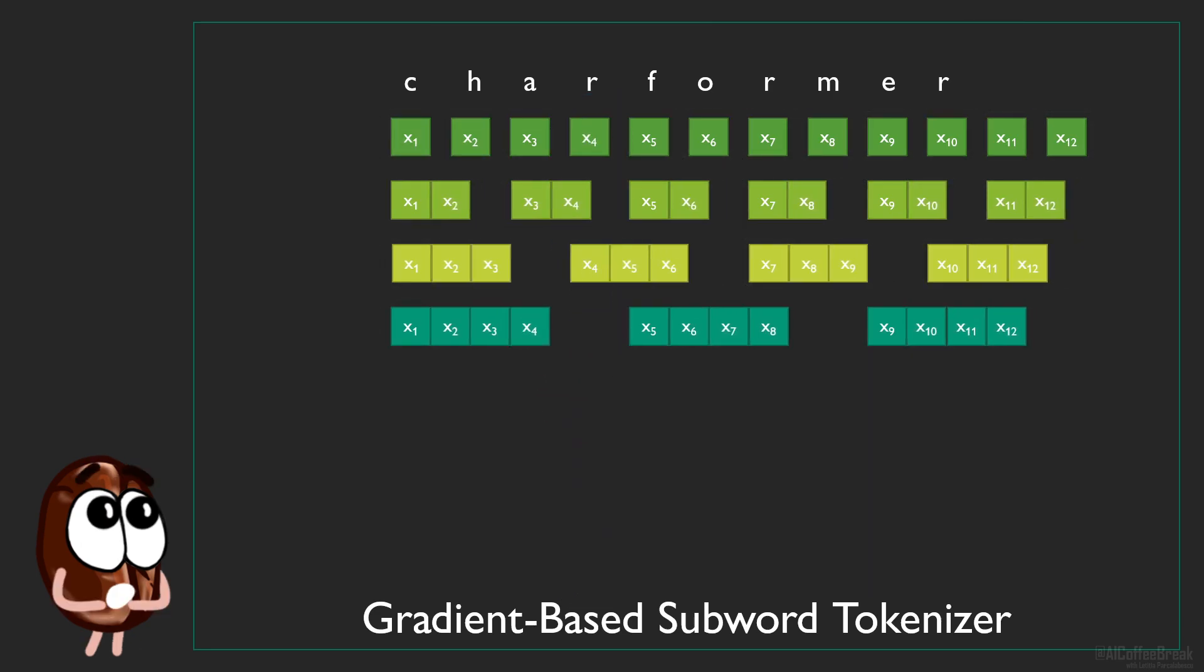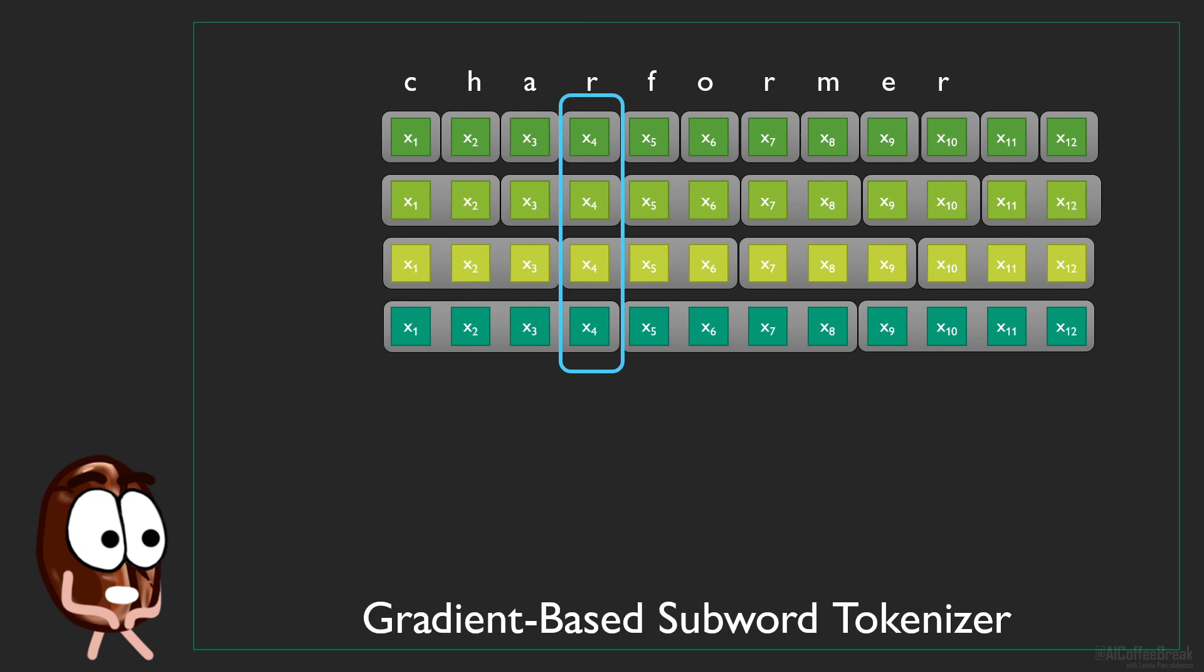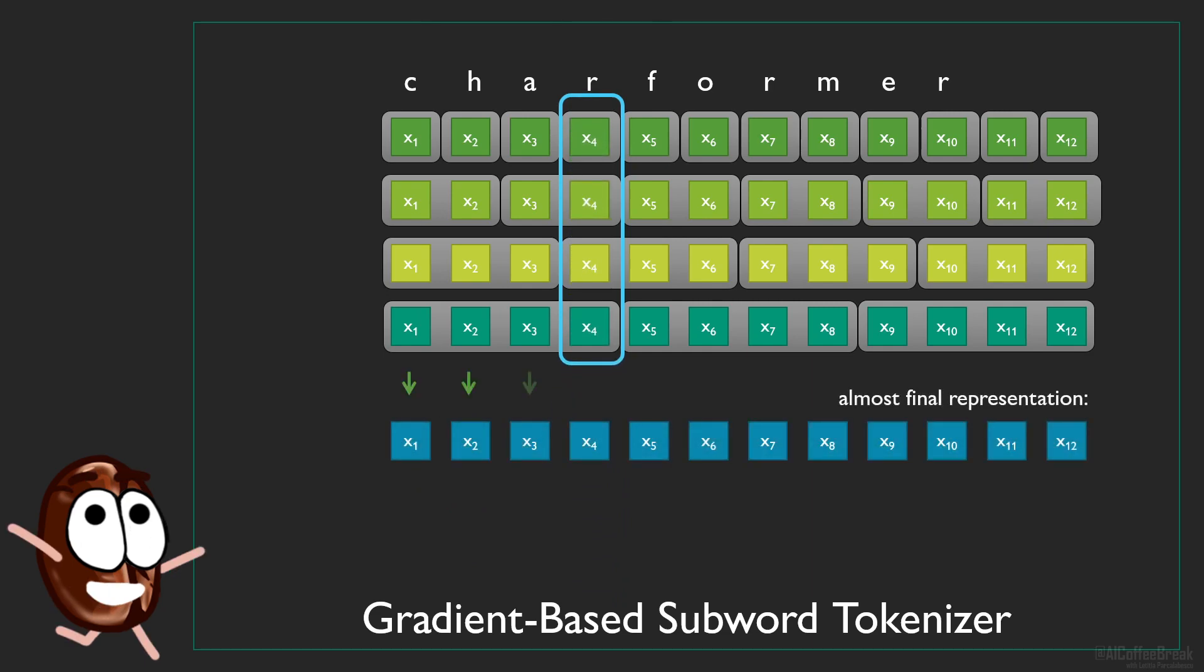So now, similarly to the MLP mixer or the Fnet, which is the Fourier transform transformer, we have first mixed the characters among each other by neighborhood. Then we mix again, but this time orthogonal to the first mixing. I honestly did not expect to find any parallel between the MLP mixer and the char former, but here it is, and now we have as many representations as characters.